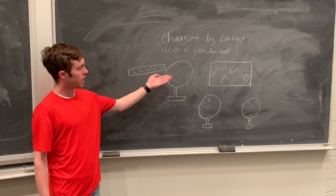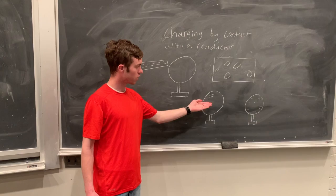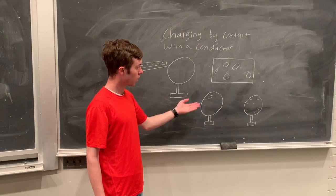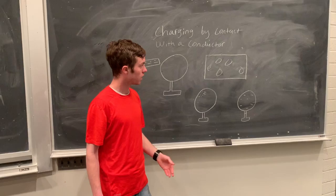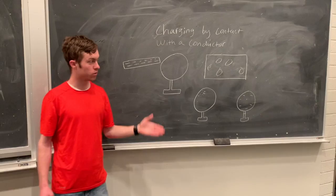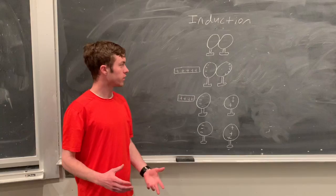So for this example, I have a charged rod that is negatively charged. As I touch this conductor, we can see that it puts a negative charge. And since it is a conductor, this negative charge will eventually spread throughout the whole entire conductor because electrons are able to flow freely through this conductor.